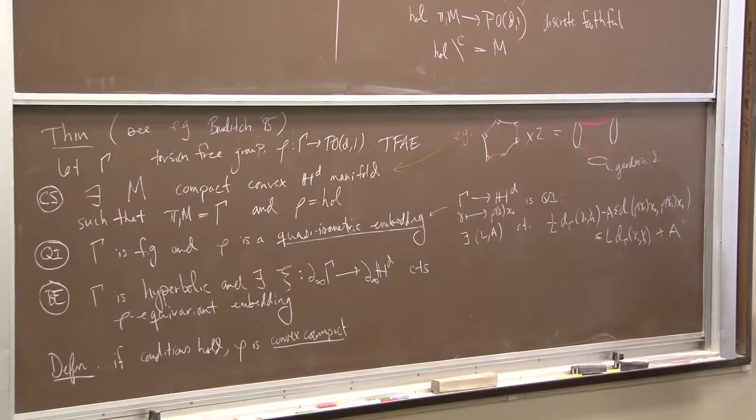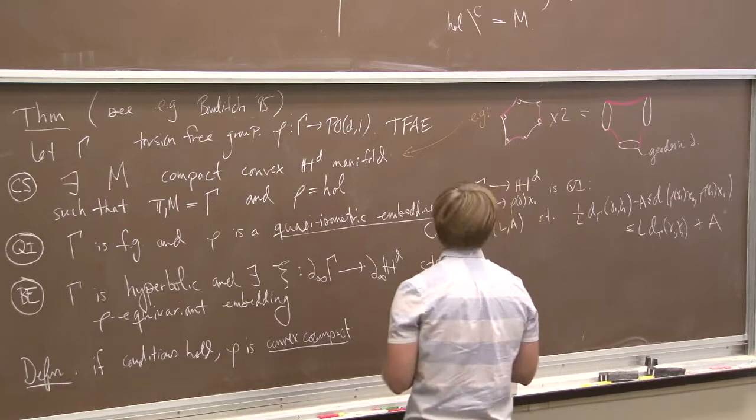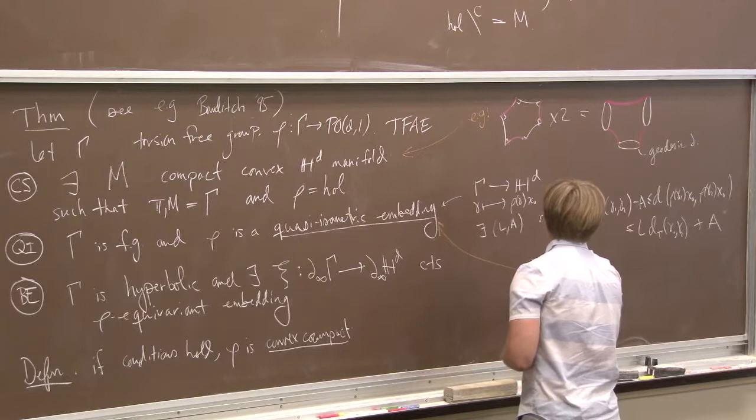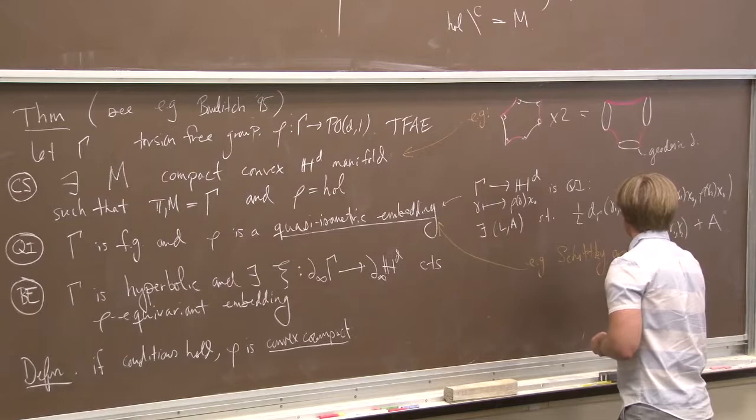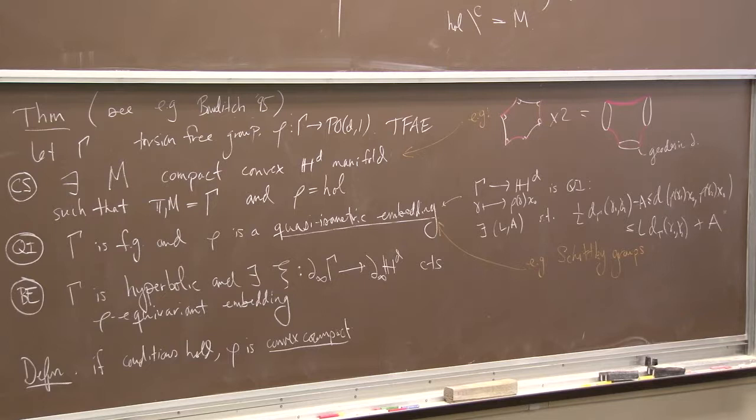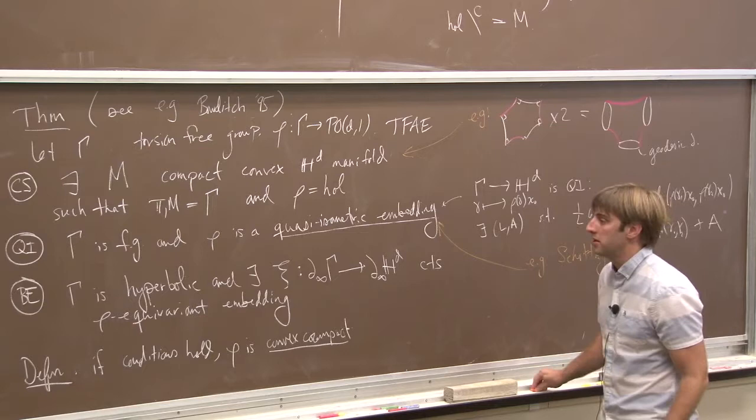What I get is a compact convex hyperbolic structure on the three-holed sphere, where the boundary is actually totally geodesic. So I just made a compact convex hyperbolic manifold. By this theorem, its holonomy representation has these nice properties. I can also make representations which are quasi-isometric embeddings — for example, Schottky groups. There's an exercise in the problem session which will ask you to prove that the Schottky groups we constructed last time are quasi-isometric embeddings.